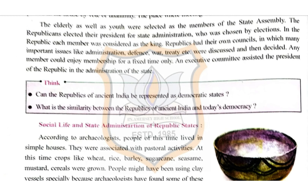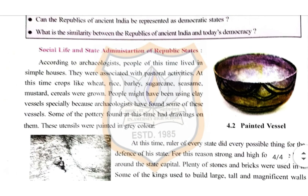Republics had their own councils in which many important issues like administration, defense, war, and treaties were discussed and decided. Any member could enjoy membership for a fixed time only. An executive committee assisted the president of the republic in the administration of the state. The next topic is the social life and state administration of the republic state.